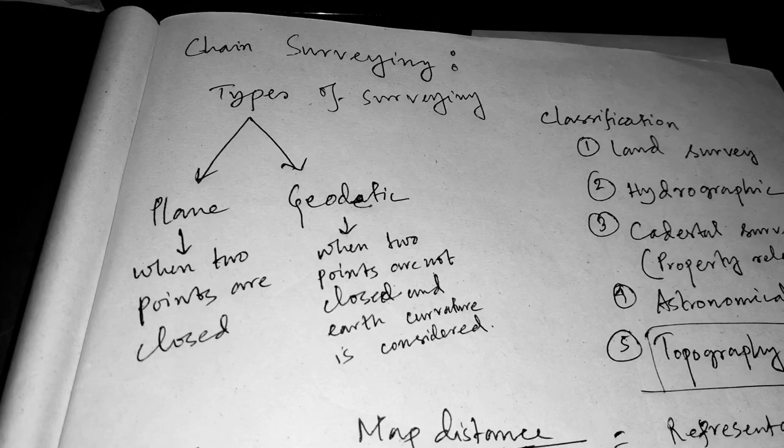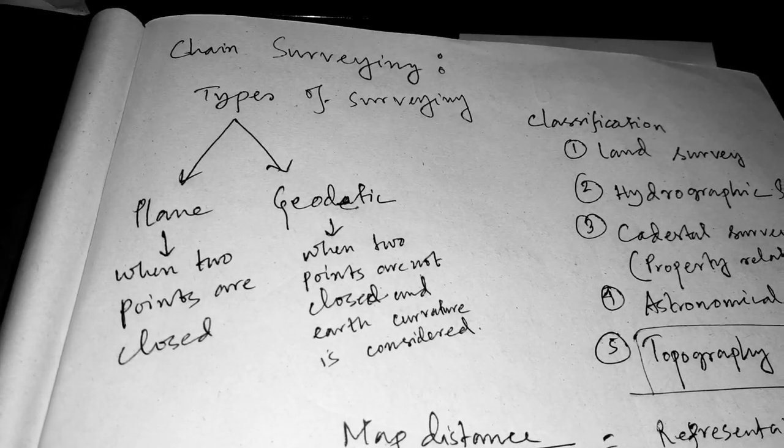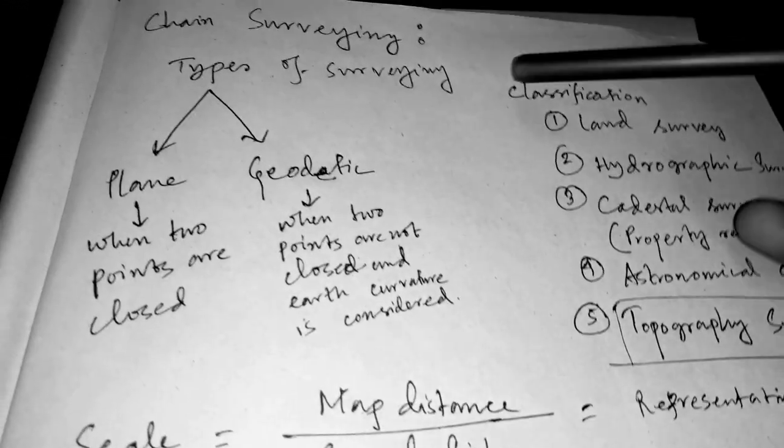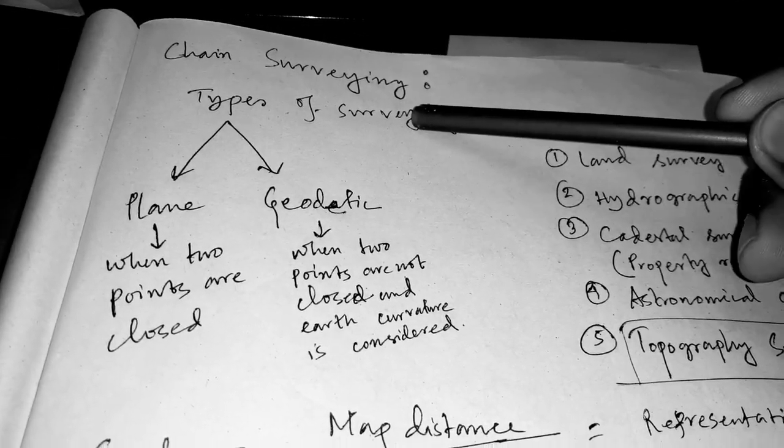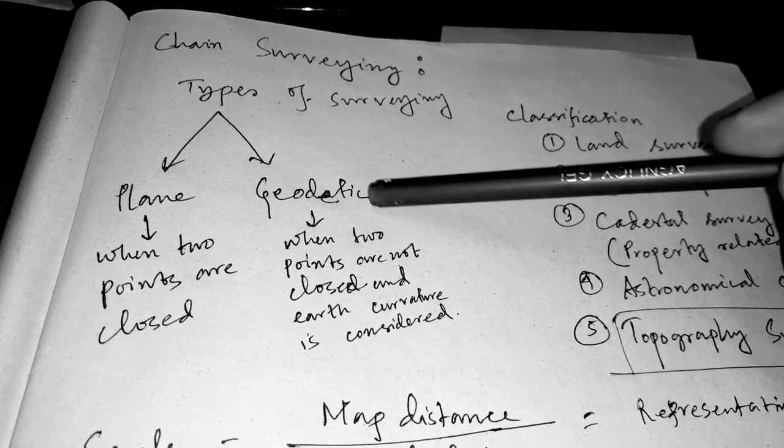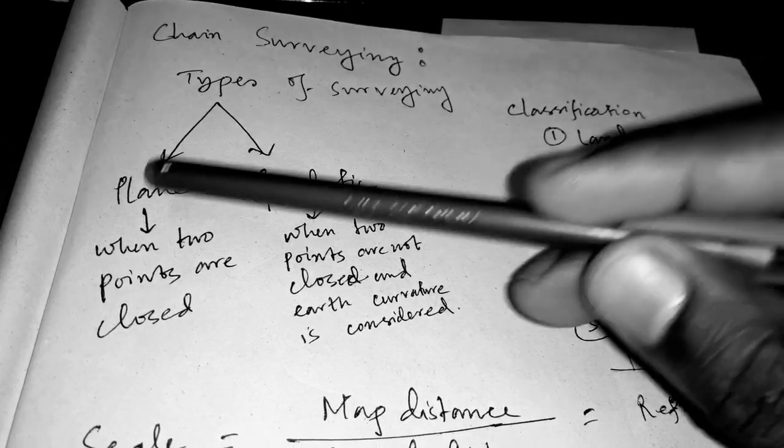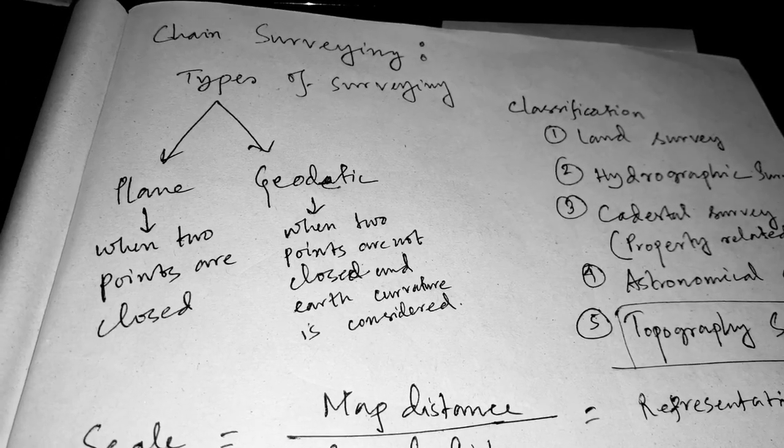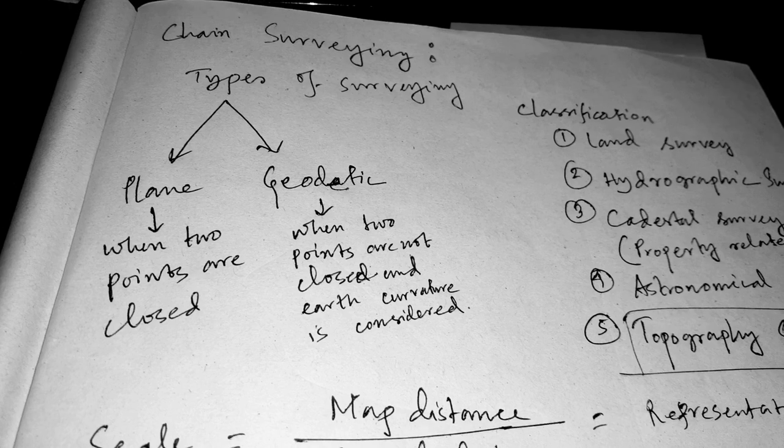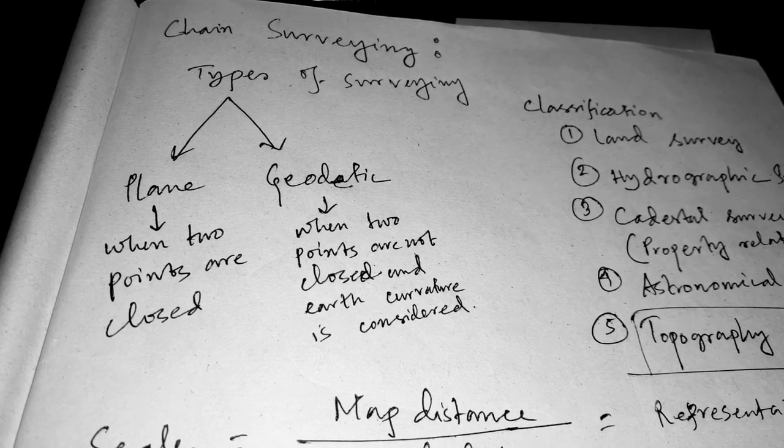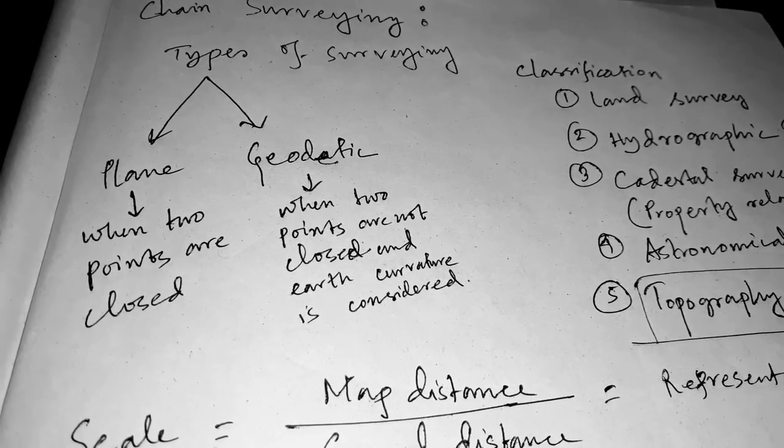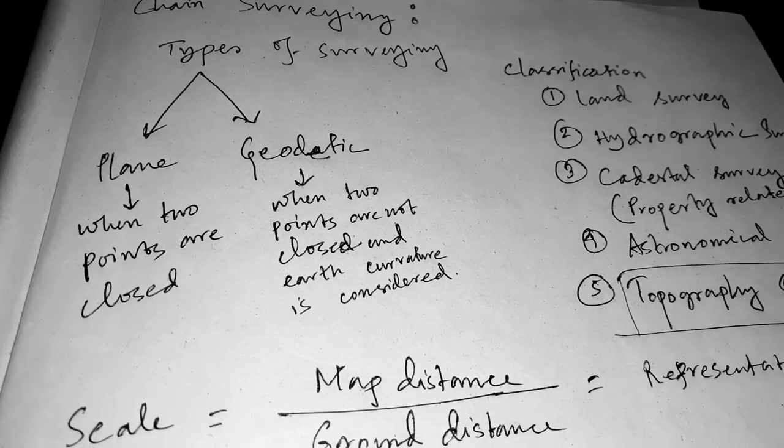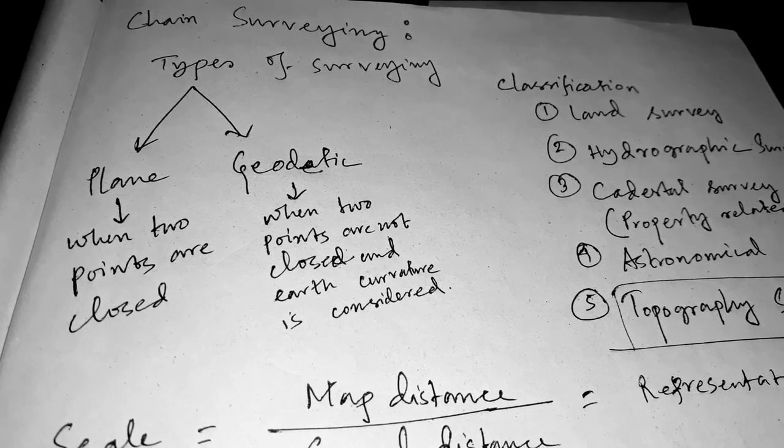Now the types of surveying: Number one is plane surveying, and number two is geodetic surveying. What is plane surveying? Plane surveying is when two points are closed in the earth surface and the earth curvature is not considered. That is called plane surveying.